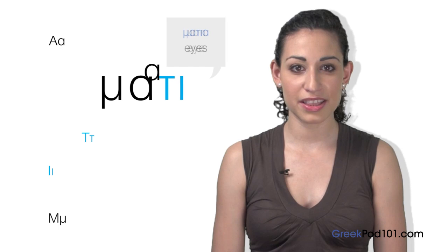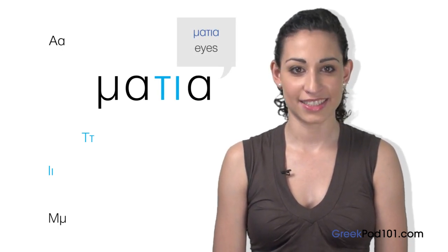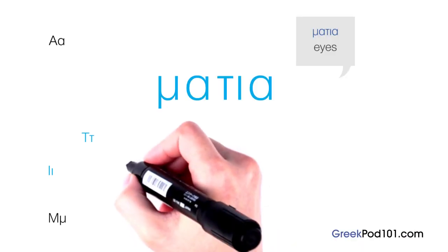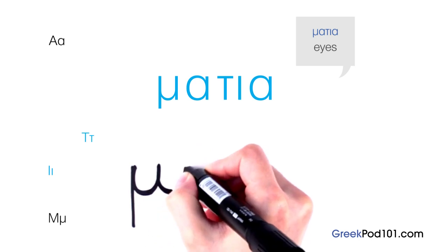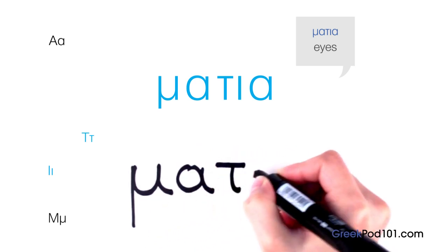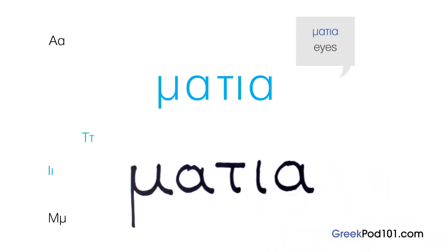And if we add another Alfa in the end, we get Mátya, which is the plural of eye. Eyes. Let's write this together. Mátya. Now it's time for Stefania's insights.